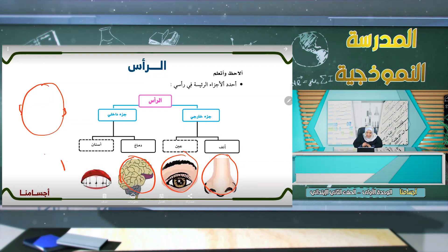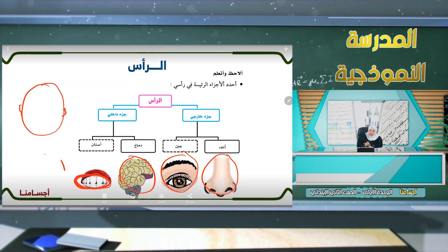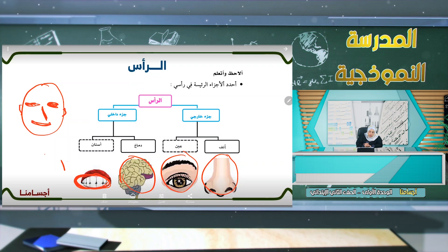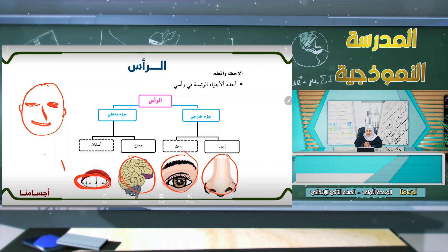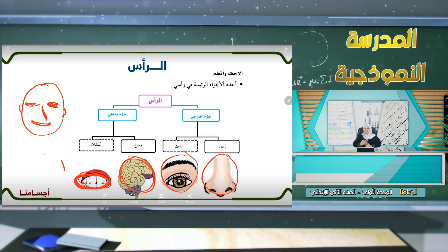وهناك أيضاً أسنان داخل الرأس. إذن الرأس له أجزاء داخلية وأجزاء خارجية. الأجزاء الخارجية هي: العين والأنف والفم والأذن. والأجزاء الداخلية هي: الدماغ واللسان والأسنان.